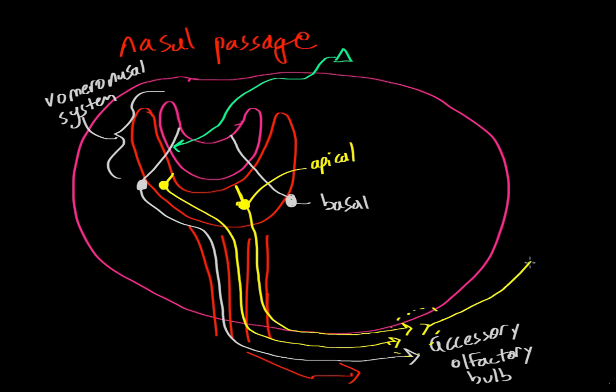And that mitral tufted cell will actually send an axon to a part of the brain known as the amygdala. And the amygdala is responsible for a host of things, but particularly known for its involvement in emotion and aggression and mating and things like that. So basically, by having various cells respond to various pheromones in the environment, an animal is able to control its behavior via this pathway to the amygdala based on these extracellular cues in the environment.